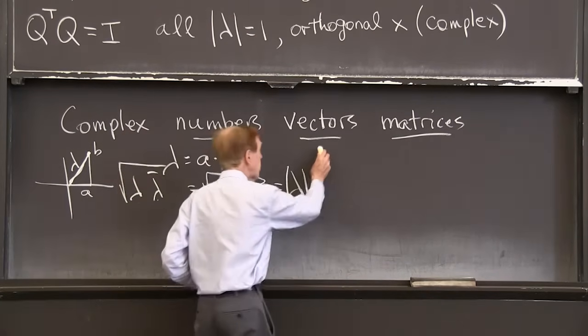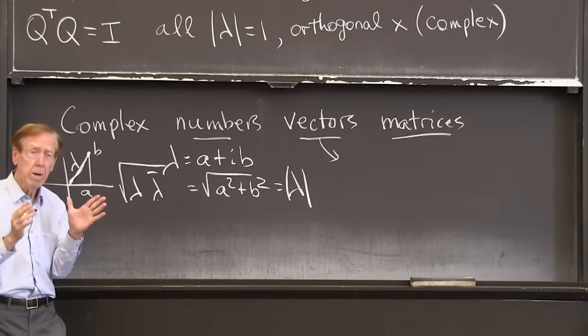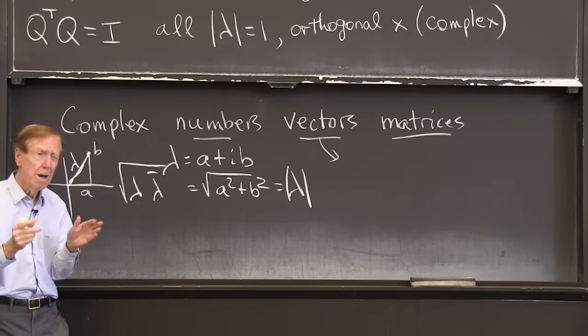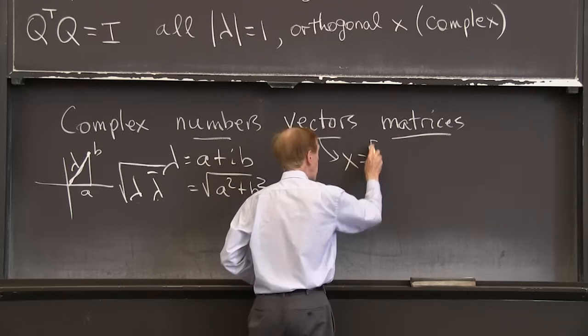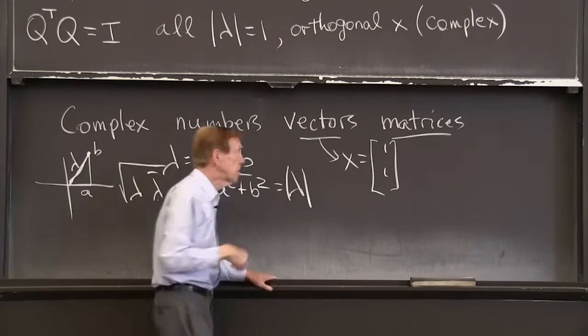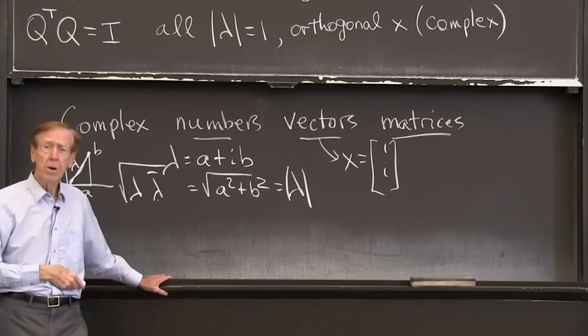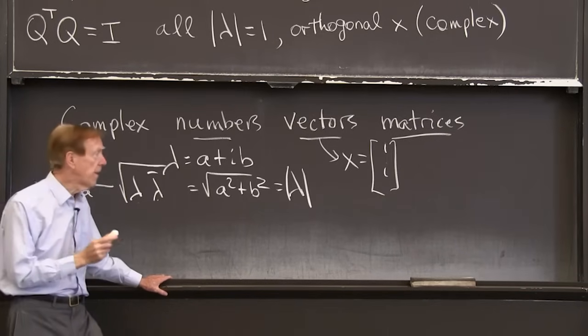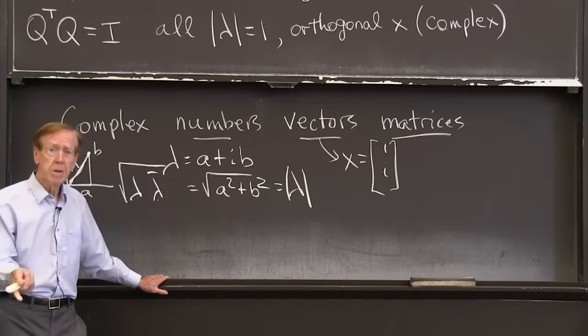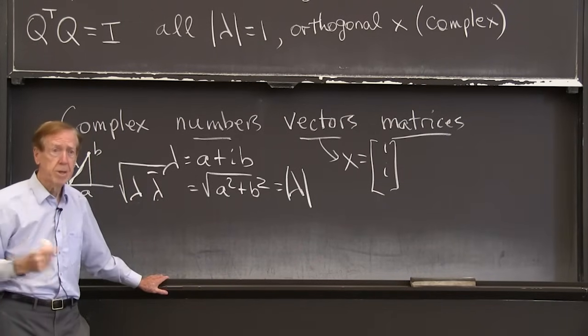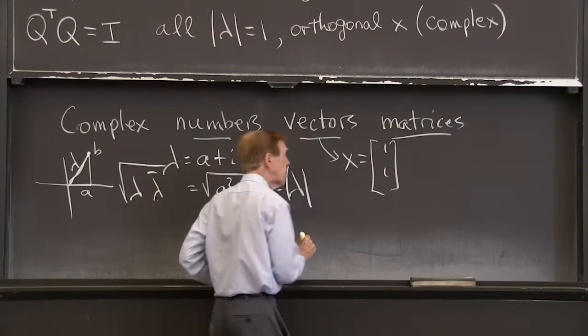What about complex vectors? What is the dot product? What is the correct x transpose x? Well, it's not x transpose x. Suppose x is the vector 1i, as we saw that as an eigenvector. What's the length of that vector? The length of that vector is not 1 squared plus i squared. 1 squared plus i squared would be 1 plus minus 1 would be 0. The length of that vector is the size of this squared plus the size of this squared square root.